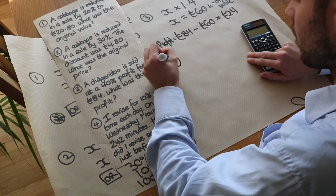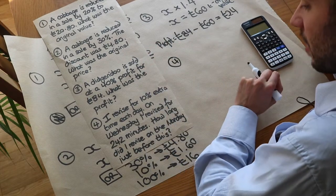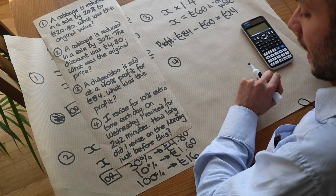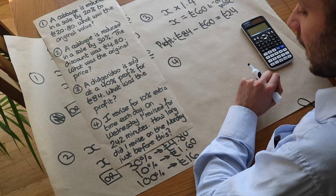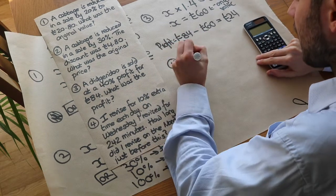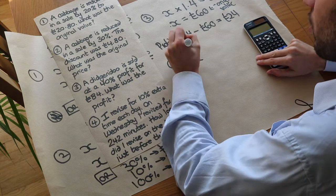Now what about the last one? I revised for 10% extra time each day. On Wednesday I revised for 242 minutes. How long did I revise for on the Monday just before this? That means that two days have elapsed. So if we said that x was the amount you revised on Monday,